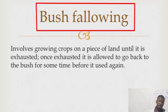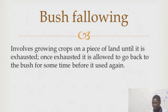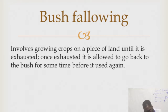Bush fallowing is also similar to shifting cultivation. But in bush fallowing, the farmer has a permanent settlement — that is the key difference. Because a farmer has a permanent settlement, they cannot move freely. Bush fallowing is a modified form of shifting cultivation where the piece of land is put under continuous cultivation until it loses its fertility, and then the farmer moves to a fresh piece of land nearby.